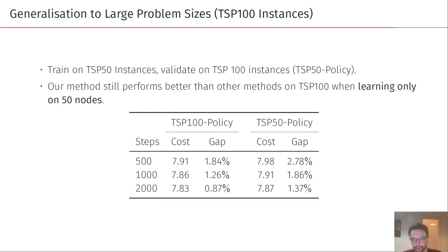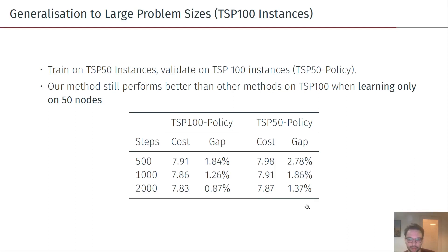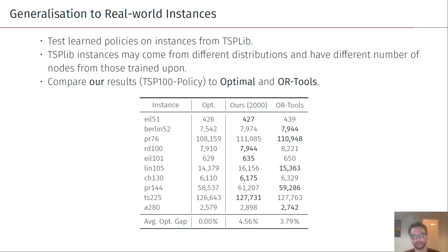When we look at generalization to larger problem sizes, we experimented with learning on TSP with 50 nodes and then applying this policy to TSP with 100 nodes. The results are seen on the two right-hand columns, and what we see is that we are still able to improve upon the random initial solutions given to our search, and these values are actually better than the previous deep learning methods, even though we only trained on 50 nodes. We also tested on TSPlib instances from a different distribution, and we do a little bit worse than OR-Tools but are not too far off, even though we never saw these distributions before.